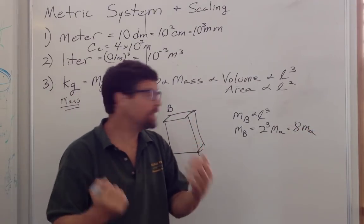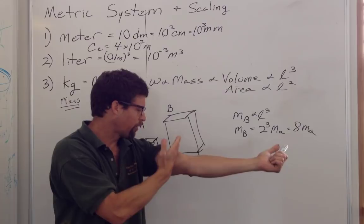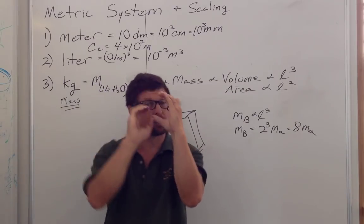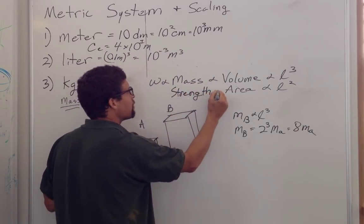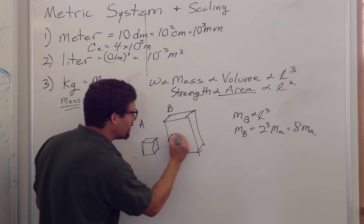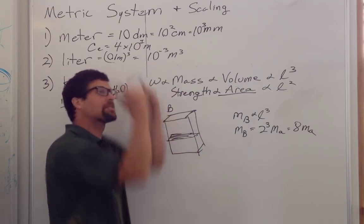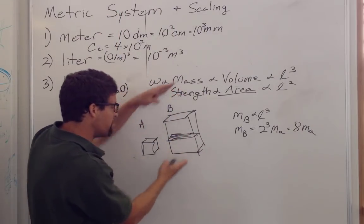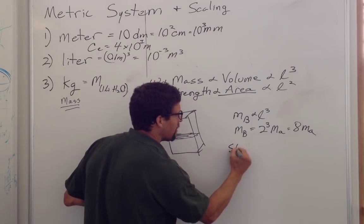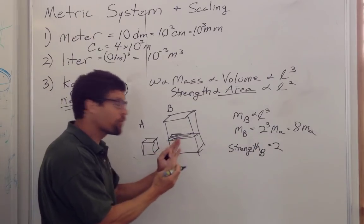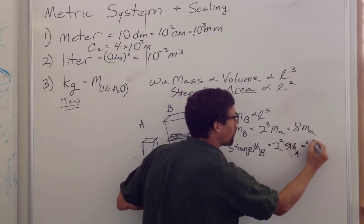But how about the strength? Is the strength also proportional to 8 times? And it's not, because the strength, the strength of our arms is proportional to, if you chop the muscle, the cross-sectional surface area of that muscle is proportional to the number of muscle fibers. So strength is proportional to the area. And when we talk about the area, we mean the area of this surface. So this can be the area of muscle fibers that are contracting to do pull-ups, or the area of bone that are supporting the structure against the force of gravity. And so the strength of B is proportional to the area of B, which is 2 squared times the strength of A, which is equal to 4 times the strength of A.